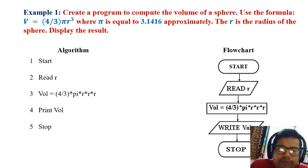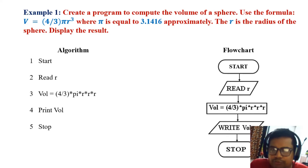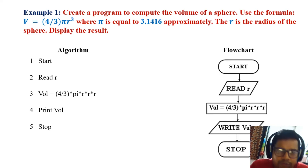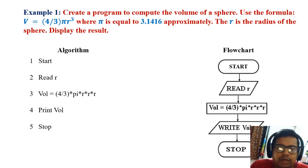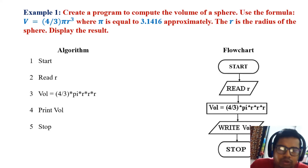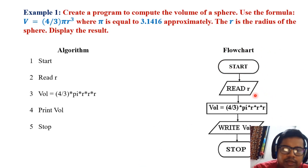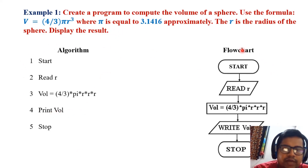Here is an example: a program that computes the volume of a sphere using the formula V = (4/3)πr³, where π ≈ 3.14 and r is the radius of the sphere. The algorithm steps are: Step 1 – Start; Step 2 – Read r; Step 3 – Compute volume using the formula; Step 4 – Print the volume; Step 5 – Stop. The corresponding flowchart shows: Start, then Read r, then the computation, then Print, then Stop — a pictorial representation of the algorithm.